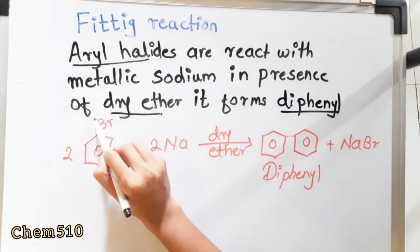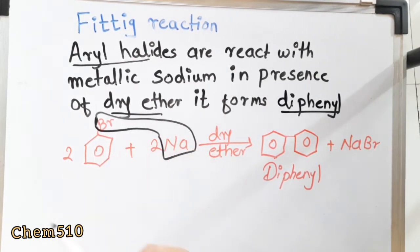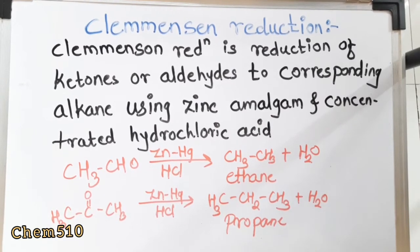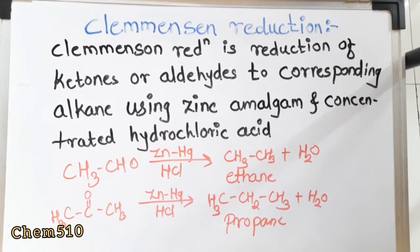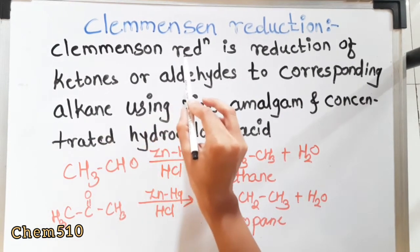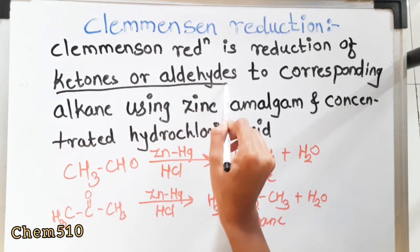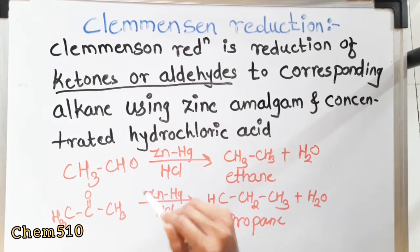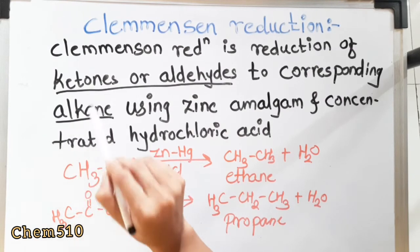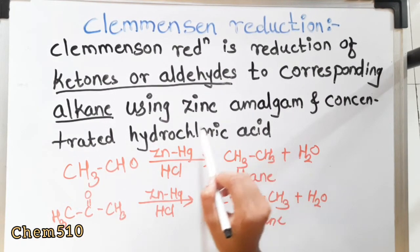Next is Clemmensen reduction. Clemmensen reduction is the reduction of a ketone or aldehyde to the corresponding alkane using zinc amalgam and concentrated HCl (hydrochloric acid). In Clemmensen reduction, ketones and aldehydes are the reactants, alkanes are the product, and zinc amalgam with concentrated HCl act as the catalyst.